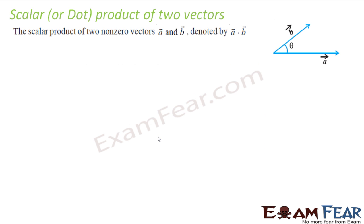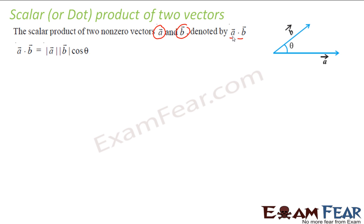Scalar or dot product. So if I have two non-zero vectors A and B, the dot product is denoted by A dot B. A dot B is nothing but the magnitude of A into magnitude of B into cos theta, where theta is the angle between A and B. We will take the smallest angle. So you have two vectors A and B, and you want to find the dot product — that will be AB cos theta.